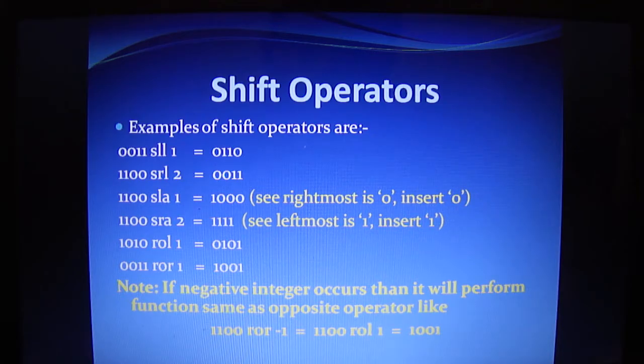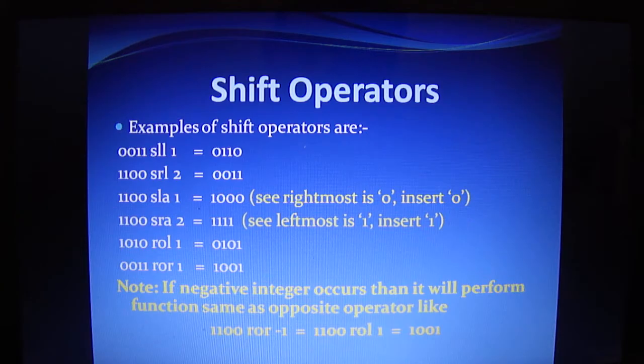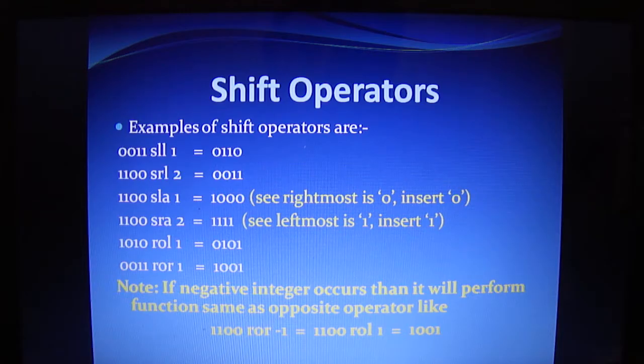If you write 0011 SLL 1 that means you are using shift left operator, it will shift one bit towards left and insert zero in the vacant place on the right side. Similarly, if you are using SRL, it will shift the bit to the right side and insert number of zeros from the left side.